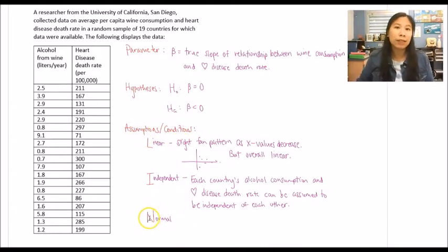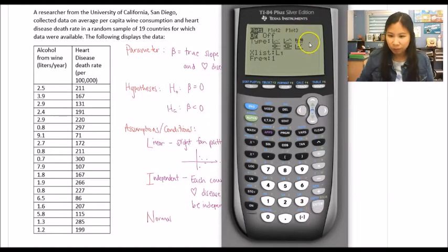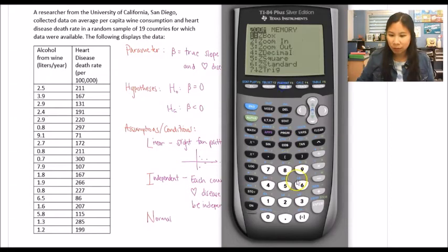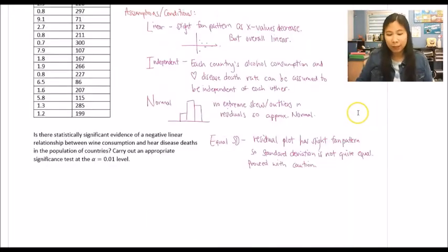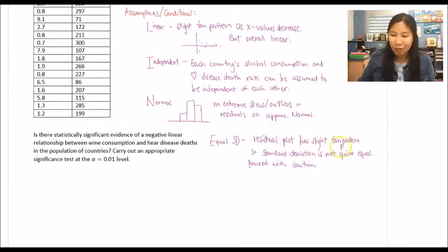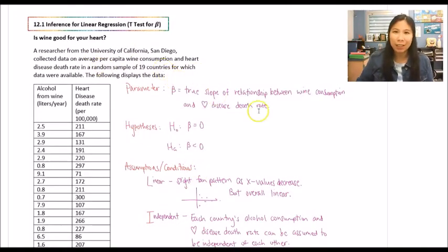To check for normality, make a histogram of residuals. In the calculator, change the stat plot from scatter to histogram, and set the x list to RESID, then ZOOM 9. The histogram shows no extreme skew and no outliers — fantastic. Sketch it and state approximately normal. For equal standard deviation, look at the residual plot again — no need to redraw it. We do see a slight fan pattern, which is exactly what we don't want. So note it's not quite equal; proceed with caution. For random: the problem states a random sample of 19 countries — confirmed.